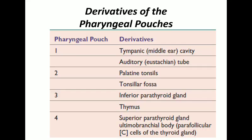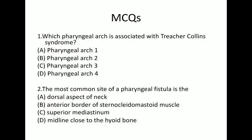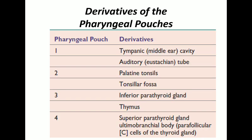In summary: the first pharyngeal pouch forms the middle ear cavity with the Eustachian tube. The second forms the palatine tonsil, with its remnant represented by the tonsillar fossa. The third pouch forms the inferior parathyroid and thymus. The fourth forms the superior parathyroid and the ultimobranchial body, which forms the parafollicular cells or C cells of the thyroid gland. That concludes the topic of pharyngeal pouches and clefts.